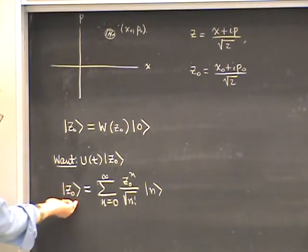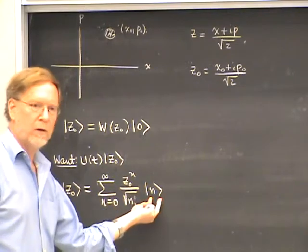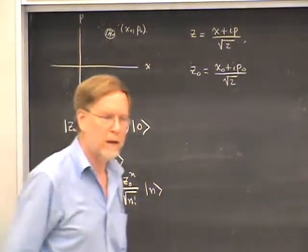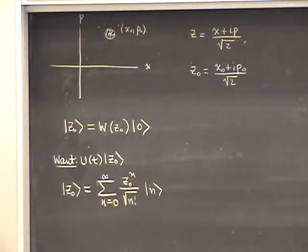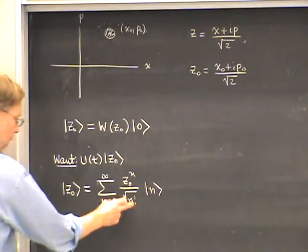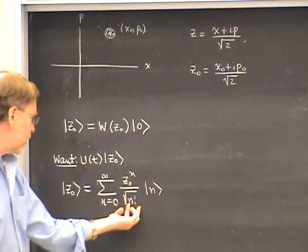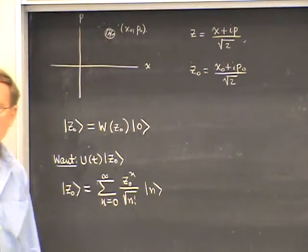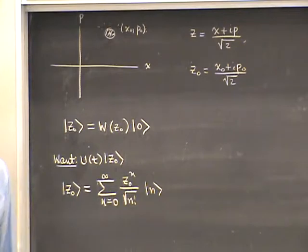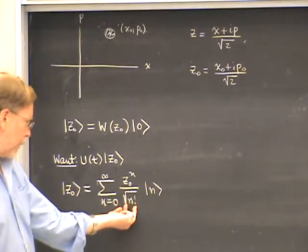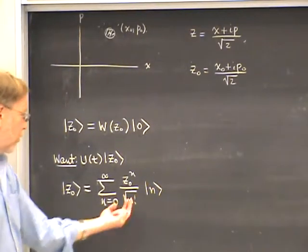Last time, by using some operator relations, we succeeded in expanding this coherent state Z₀ as a linear combination of energy eigenstates — a preliminary step towards computing the time evolution. As you know, you frequently do this by expanding the initial conditions as a linear combination of energy eigenstates. This gives us an explicit formula for the coefficients: Z₀ to the nth divided by the square root of n factorial. We could also obtain them by doing an integral of a Gaussian wave packet against the harmonic oscillator eigenfunctions, which have Hermite polynomials, but by operator methods we get the coefficients much more easily.